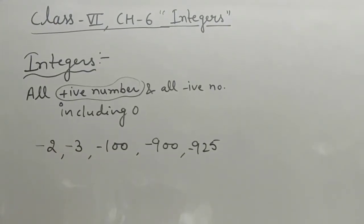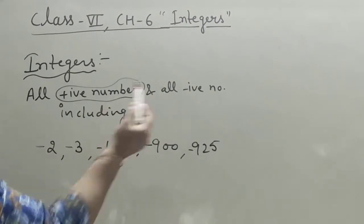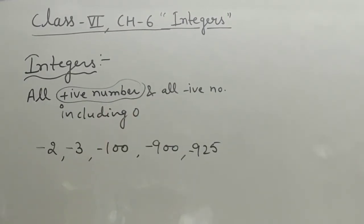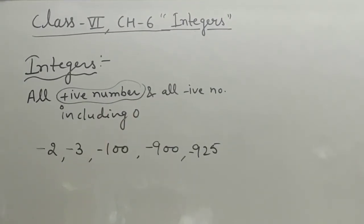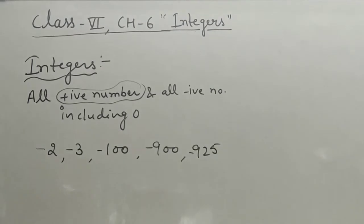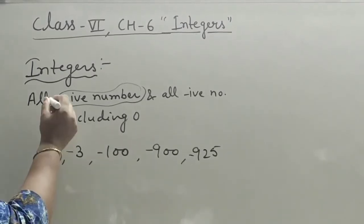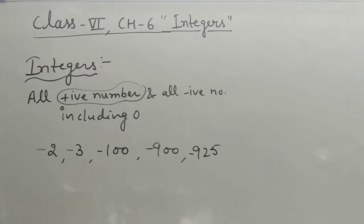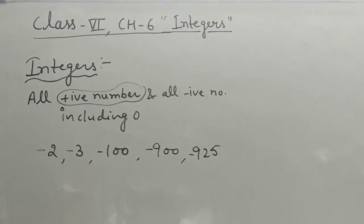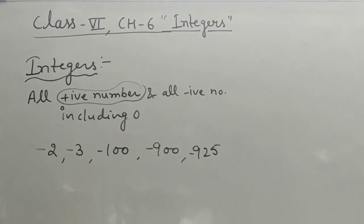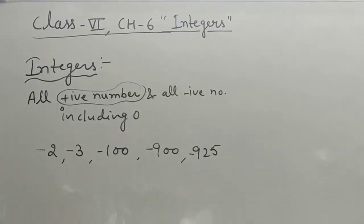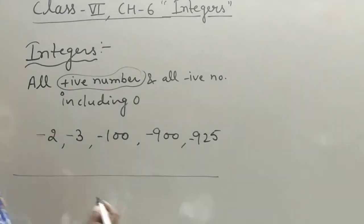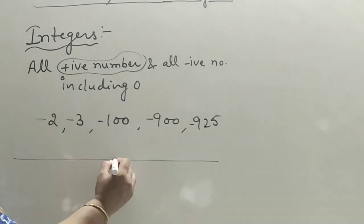So, all positive numbers and all negative numbers — the combination of positive and negative numbers including 0 — are all called integers.